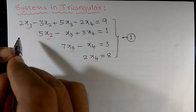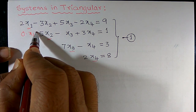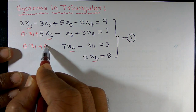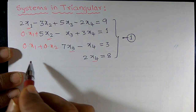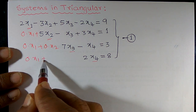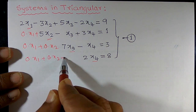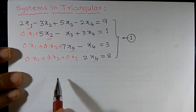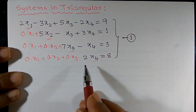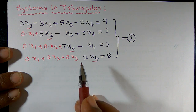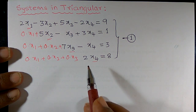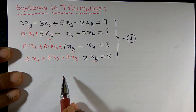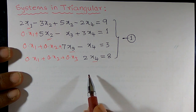For example, I can write down: 0 into x1, 0 into x1 plus 0 into x2, 0 into x2 plus 0 into x3. So it means it is a square system. In such a case, it always has a unique solution. How do we find out the solution? By back substitution.